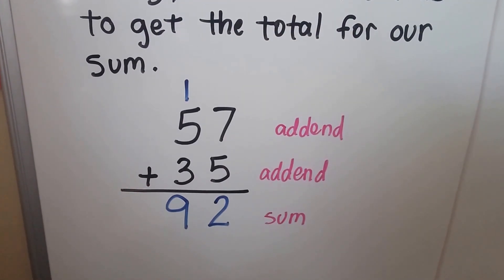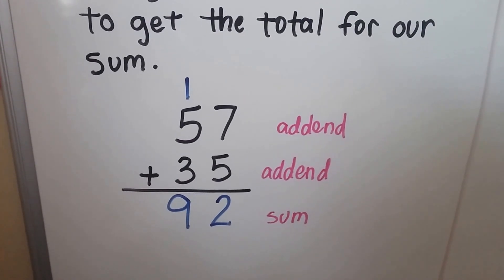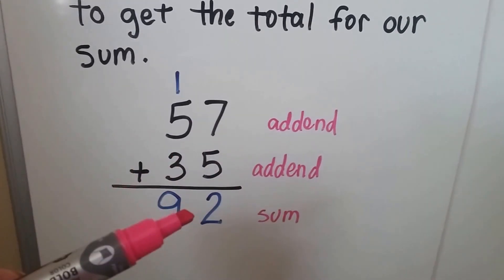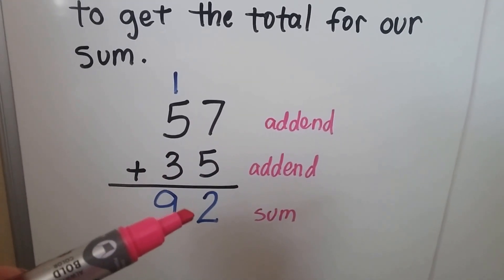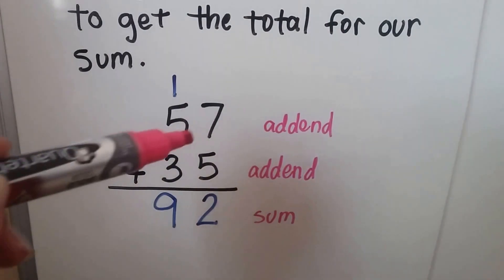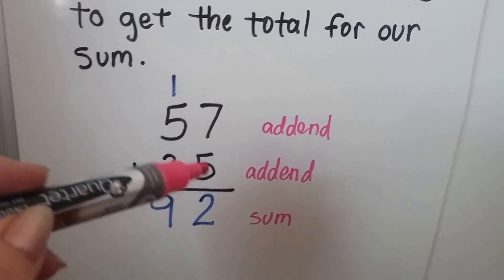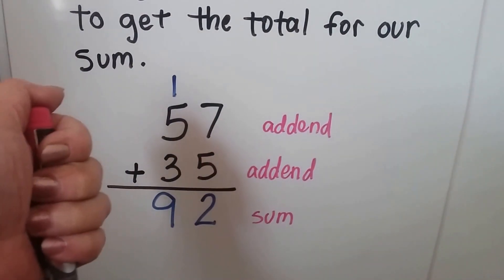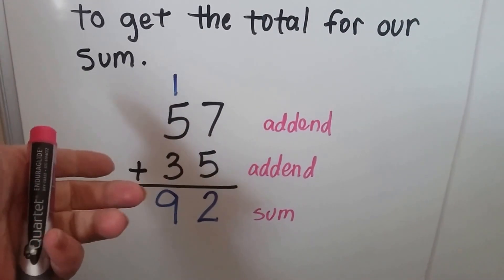We have 57 plus 35. We start in the ones place. The 57 is an addend. The 35 is an addend. And our sum goes down here below the line. So we start with the 7 and the 5. The 7 is larger, so we count on from the 7: 7, 8, 9, 10, 11, 12.